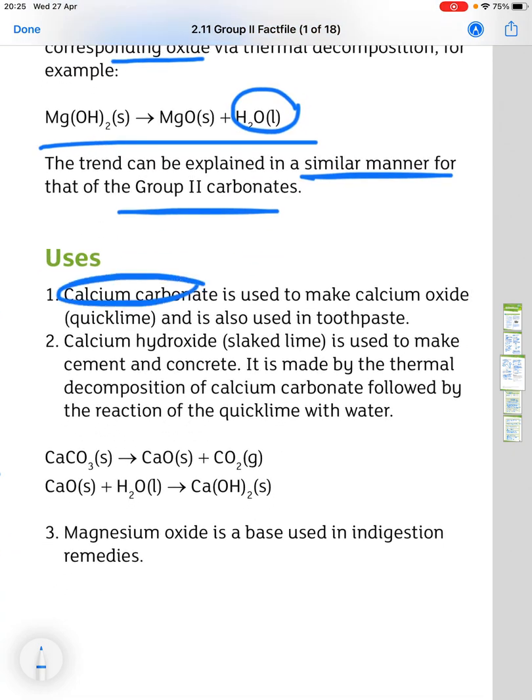Finally, the uses. So, calcium carbonate is used to make calcium oxide, which is quicklime, and it's also used in toothpaste, not the quicklime, the calcium carbonate.